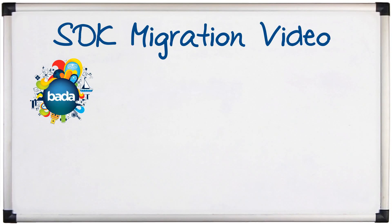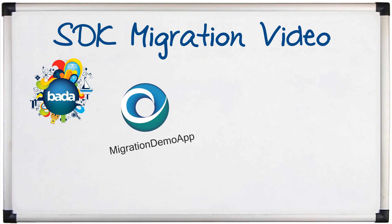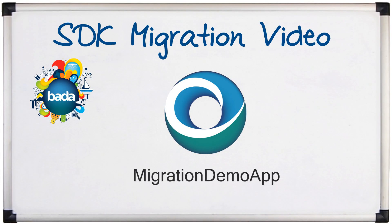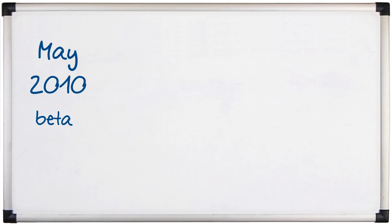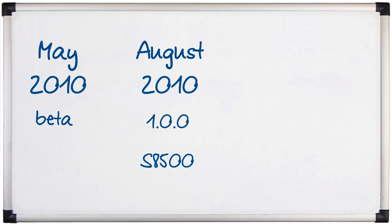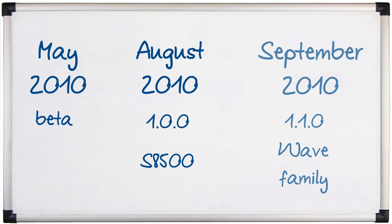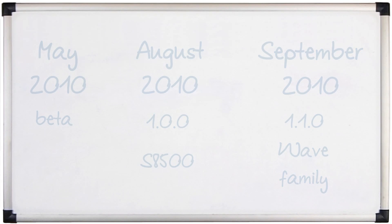To demonstrate the migration method I have created a simple application called Migration Demo App. After running through this method I will give you some useful hints and recommendations to make the porting process as pain-free as possible. The Bada SDK was first made available in May 2010 in a beta state, and since August 2010 the release 1.0.0 has been available to download. This version mainly targeted the first Samsung Wave device, the S8500. SDK version 1.1.0 is aimed at the newer members of the Wave family, and Bada apps developed for the Wave S8500 can be reused.